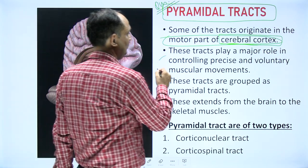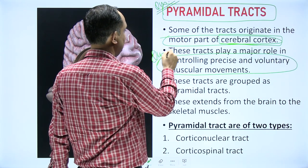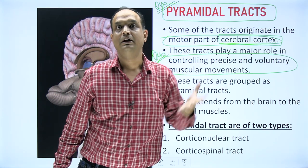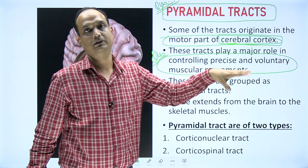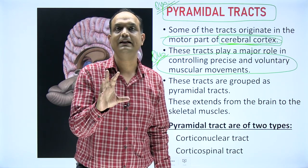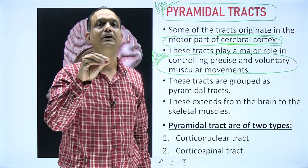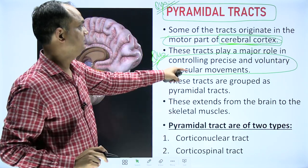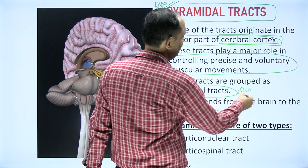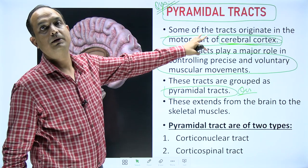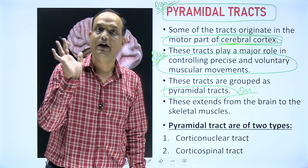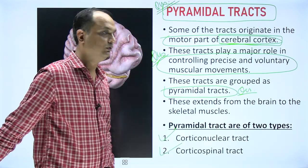Pyramidal tracts play a major role in controlling precise and voluntary skeletal movements. The muscles controlled by pyramidal tract fibers are those responsible for precise and voluntary muscular movement — specifically the distal limbs, meaning the terminal parts like fingers and toes, which are responsible for skilled voluntary movements. The pyramidal tract is a group of fibers arising from the cerebral cortex motor area, extending from the brain to the skeletal muscles. Pyramidal tracts are further divided into two parts: corticonuclear and corticospinal tracts.